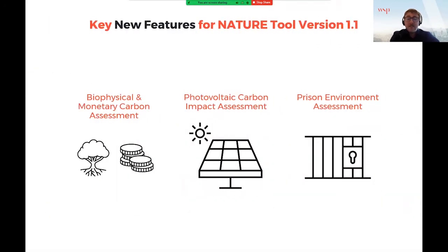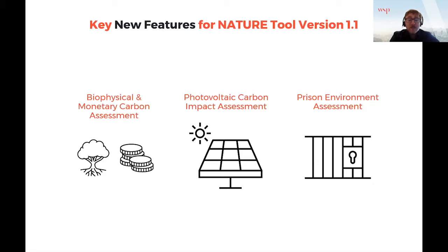There are a couple of new features being implemented in the next Nature Tool version 1.1, due to be published later this month. These include biophysical and monetary carbon assessment in addition to a scoring system. The tool can also assess the photovoltaic carbon impact — basically the carbon emissions abated by having photovoltaic installations. We also worked together with the Ministry of Justice to develop a feature within the tool to specifically assess the prison environment, though that's an optional element.